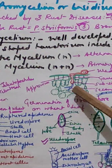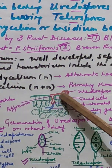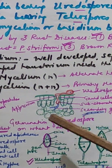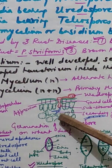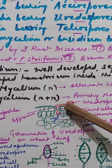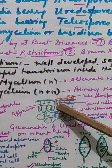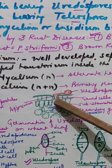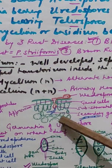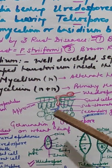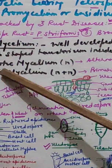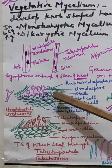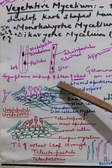The uredospore germinates through the germ pore and forms a germ tube. This germ tube enters inside the leaf through the stomatal chamber. It forms an appressorium, which forms a peg-like structure, then a substomatal vesicle, which gives rise to the secondary mycelium. In this way, uredospores keep germinating and give rise to fresh uredia — these are the repetitive spores.